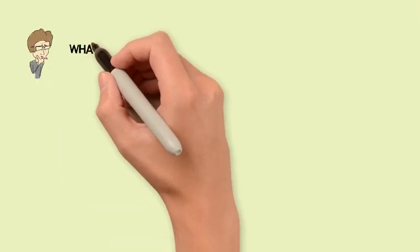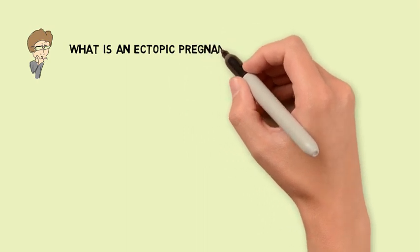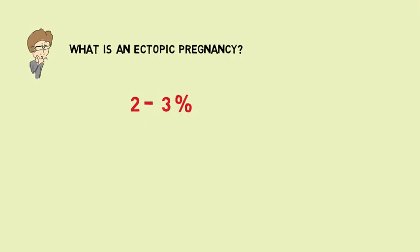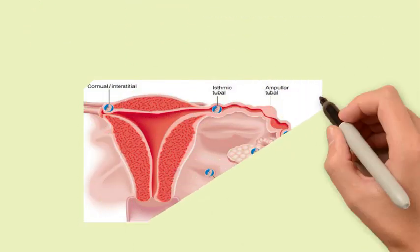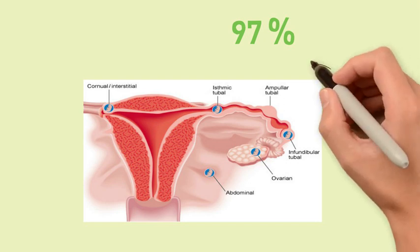What is an ectopic pregnancy? It is an implantation of pregnancy outside the endometrial cavity, and it accounts for 2 to 3% of all pregnancies. The maternal mortality rate of ectopic pregnancy accounts for 0.2 per 1,000 pregnancies. The fallopian tube is the most common location of ectopic implantation, accounting for 97%, and in the tube, the ampullary part is the most common part.